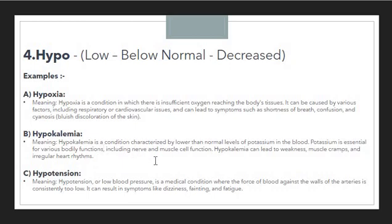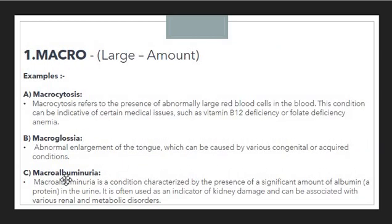Hypokalemia can lead to weakness, muscle cramps, and irregular heart rhythms. The third example is hypotension, which you can compare with hypertension — hypertension means high blood pressure, while hypotension means low blood pressure. Hypotension is a condition where the force of blood against the walls of the arteries is consistently too low. If you want to show something too low, you use the prefix hypo. It can result in symptoms like dizziness, fainting, and fatigue.